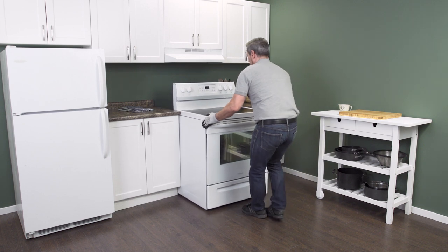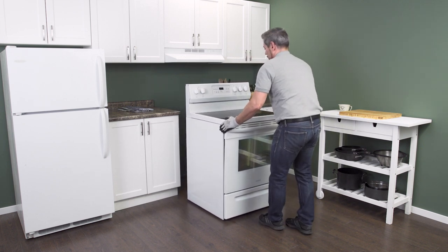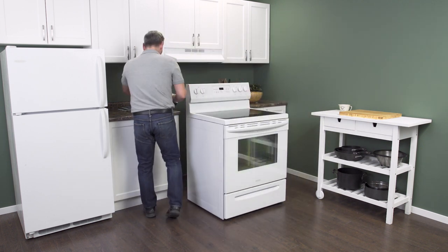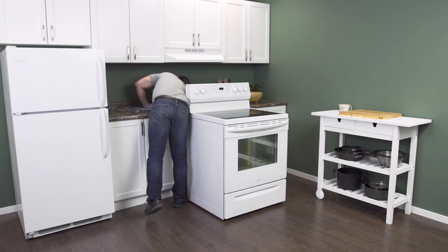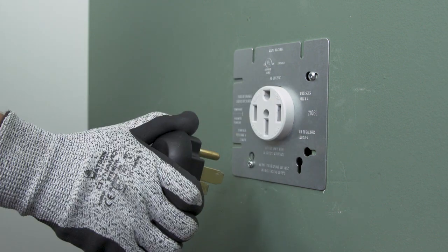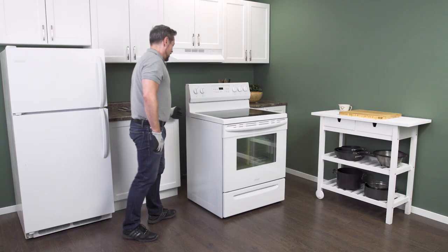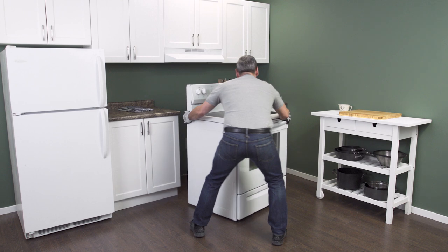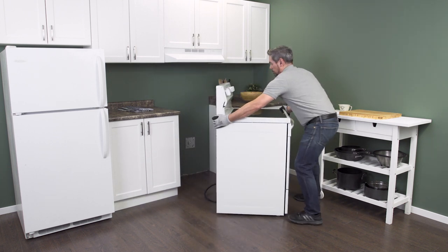Gently pull the range slightly away from the wall. As soon as there's enough room, go in behind and unplug it from the receptacle. Make sure that there isn't too much tension on the cord. Now slide the range all the way out so you have plenty of room to work.